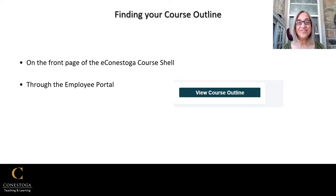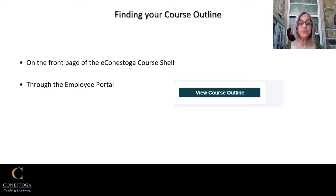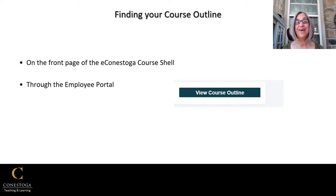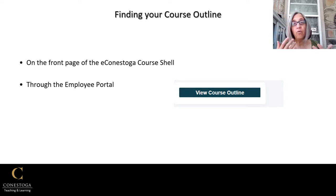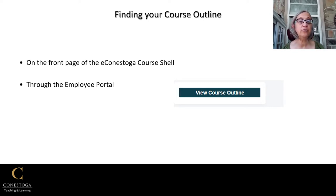Let's talk about how to find your course outline. The easiest way is to look on the front page of your Econestoga course shell once you receive it, and you'll find an icon that says view course outline. However, what if you want to look at your course outline before the Econestoga shell is generated, or if you want to look at another course outline? Let me show you how to find the course outline on your employee portal.